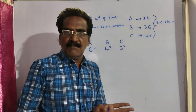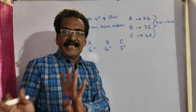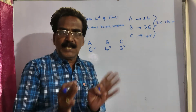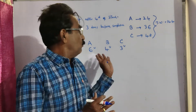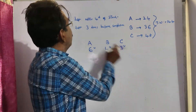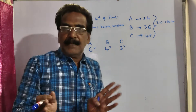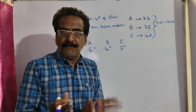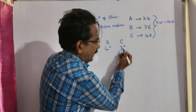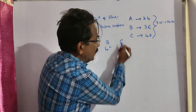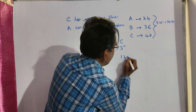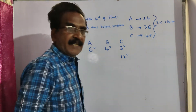Assume the total work lasted for X days. Let us see who worked for how many days. C left 4 days after the start of the work, so C worked for 4 days. In 4 days, C completes 4 times 3 equals 12 units of work.